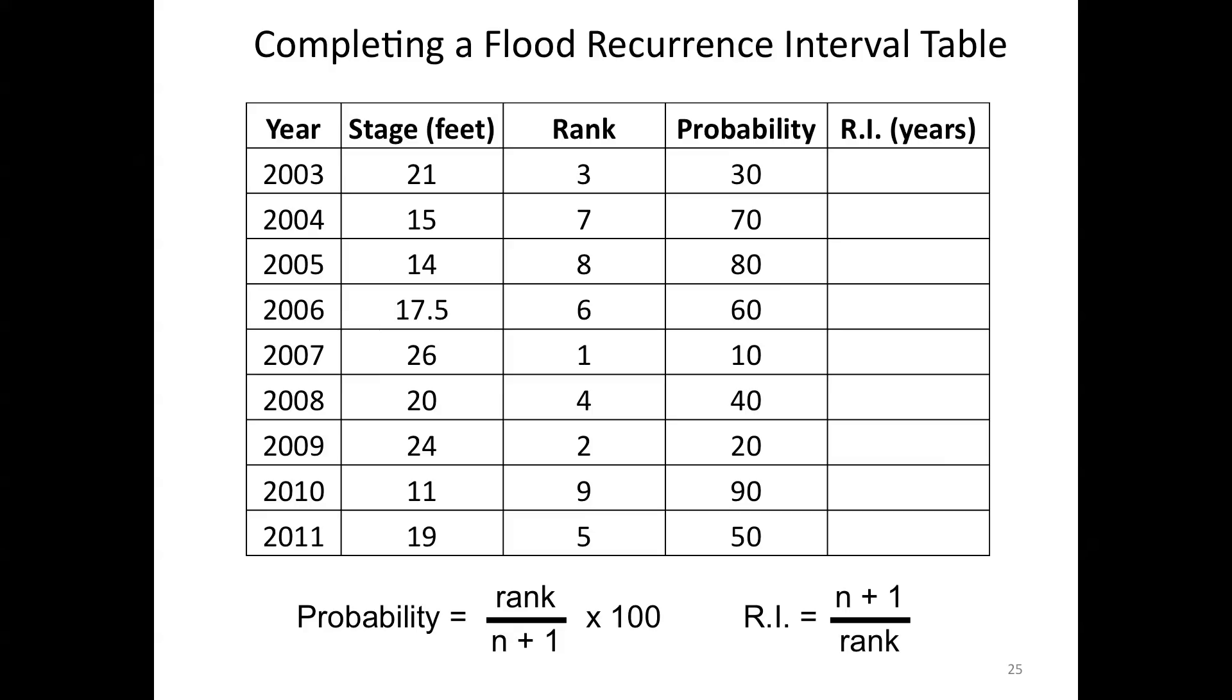We're going to calculate recurrence interval though again as n plus 1 over rank. So 9 plus 1 over rank. And for the first of those then, that would be 10 divided by a rank of 3. So 3.33. We'll do this for 2004, 1.43. 10 divided by 7. 10 divided by 8. 10 divided by 6. 10 divided by 1. That was a hard one. 10 divided by 4. So 2.5. 10 divided by 2. So 5. And finally, 10 divided by 5. So recurrence interval of two years.